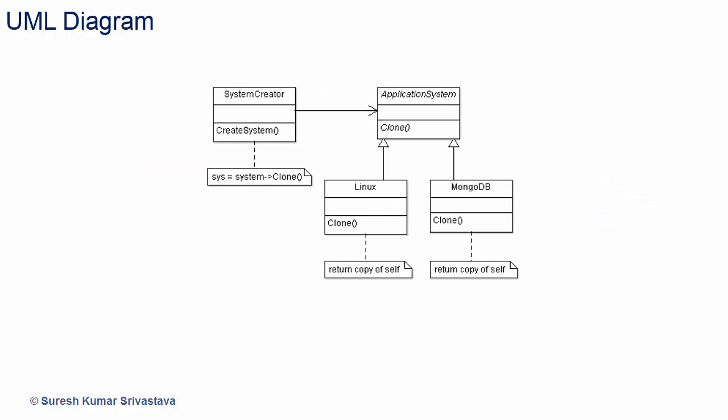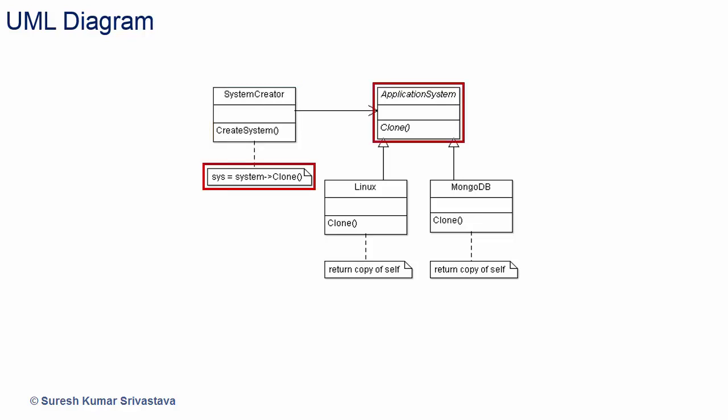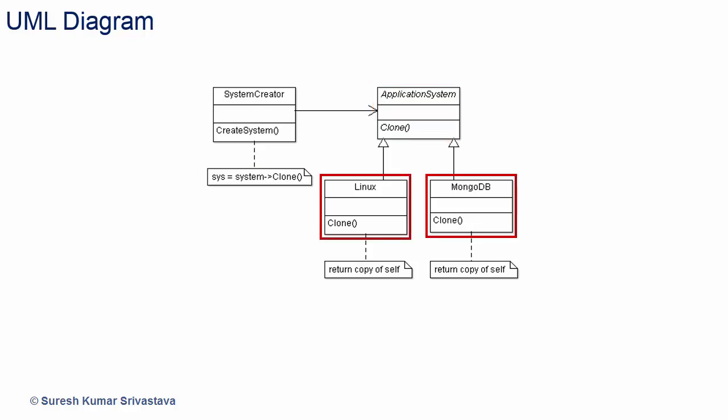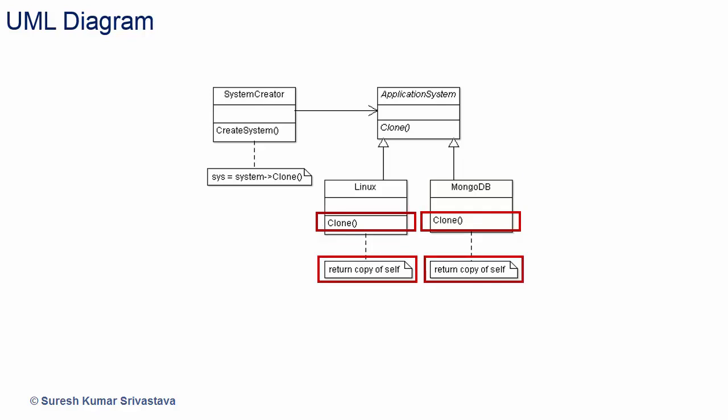I have created a UML diagram for this. The class system creator has an instance of application system and requests the application system to clone the object. Application system provides the clone interface for cloning. Linux and MongoDB are inherited from application system and implement the clone method. The clone method returns a copy of self. So objects to be created are specified as prototypical instances and new objects are created by copying these prototypes.